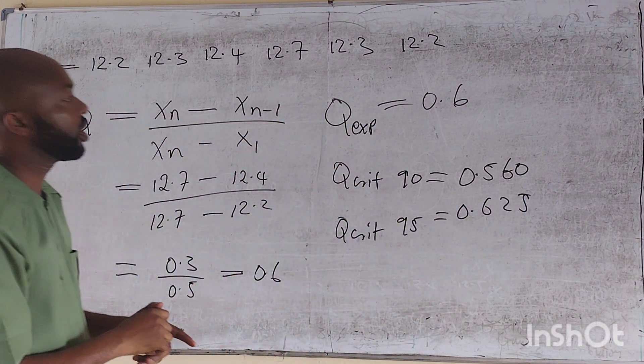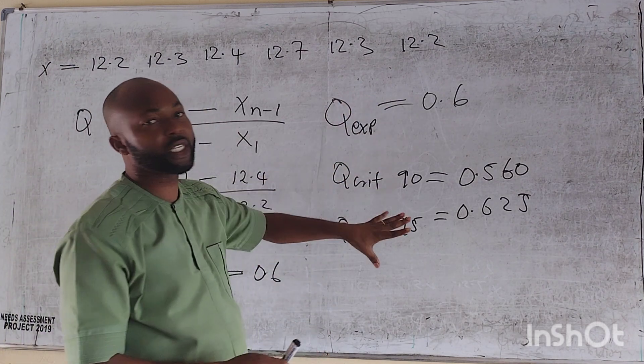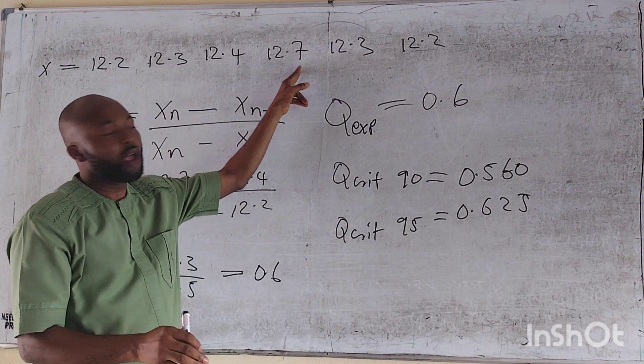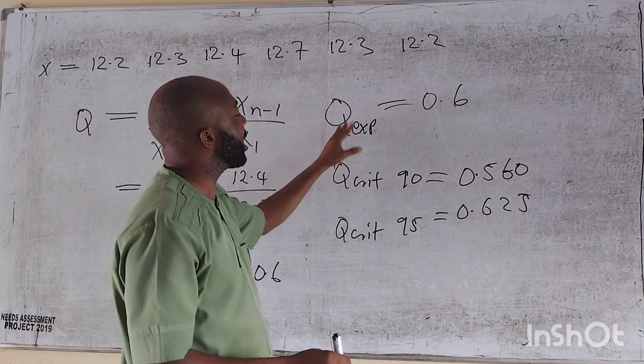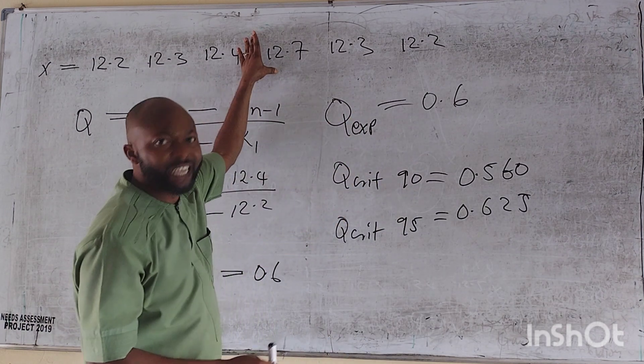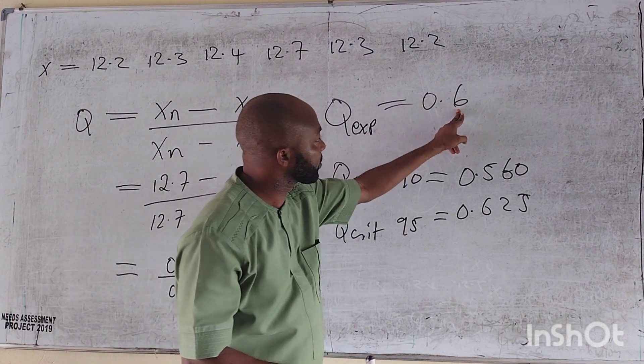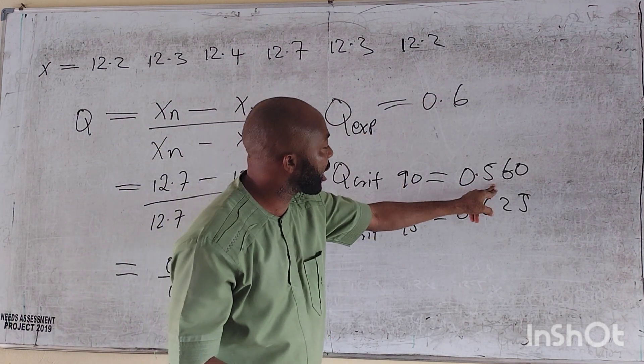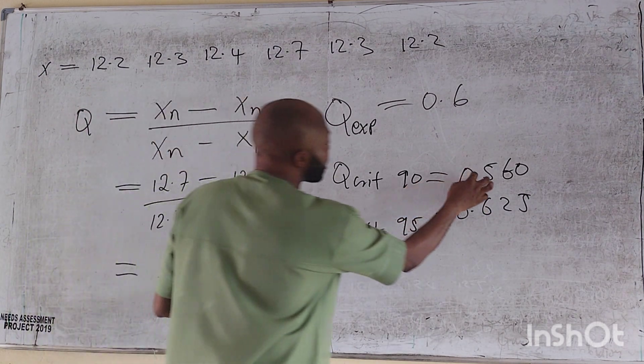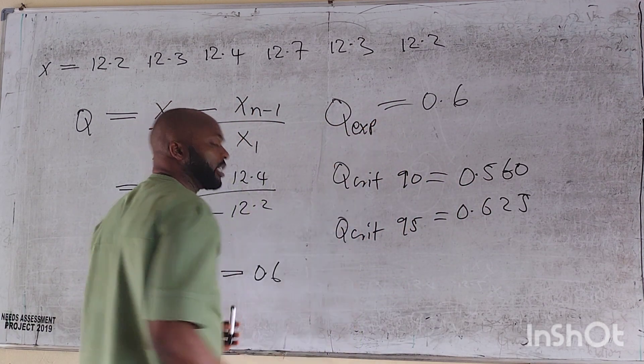Remember, the rule says when Q-experiment is greater than Q-critical, we reject the outlier 12.7. But if Q-experiment is less than Q-critical, we maintain. So from here, we have 0.6. We have 0.5 at 90. So at 90, which they referred us to, this is 0.5, it is less than 0.6 of the experiment.